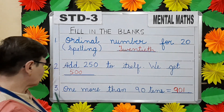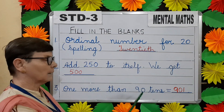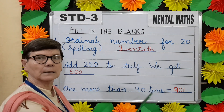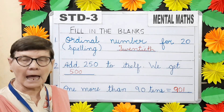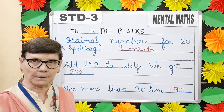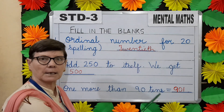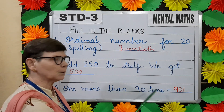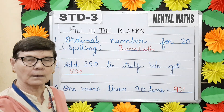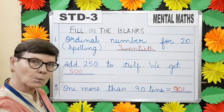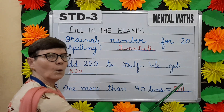Question number three. One more than ninety tens. More means add, adding one. First we will multiply these two: ninety into ten will give you nine hundred. Nine hundred plus one will give you nine hundred and one.